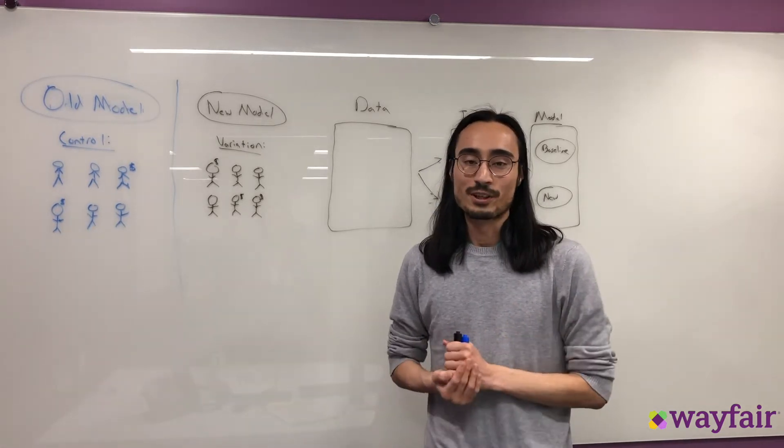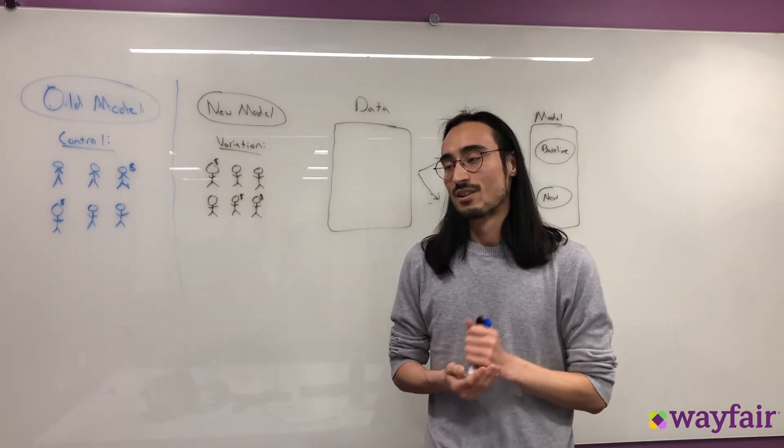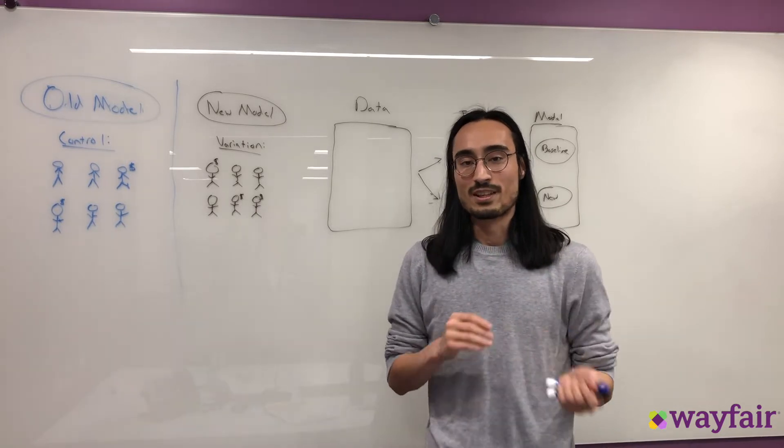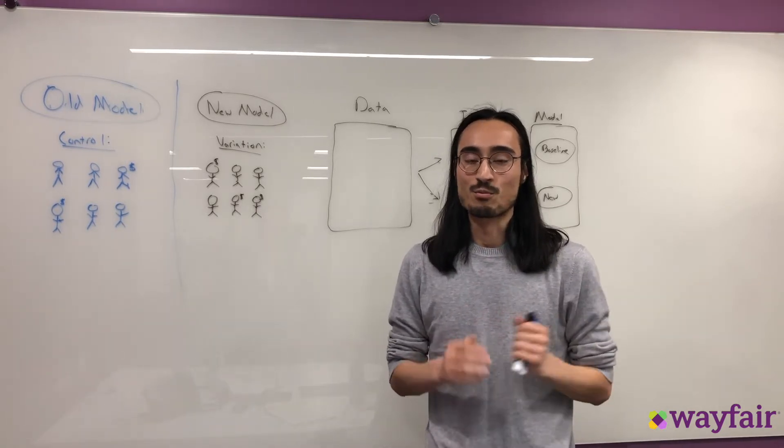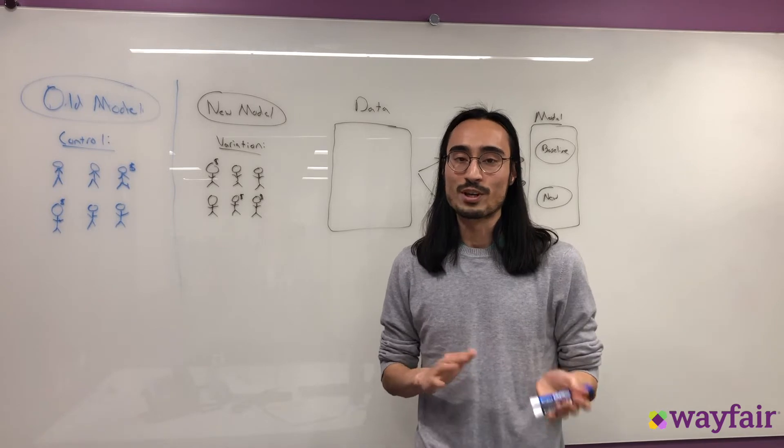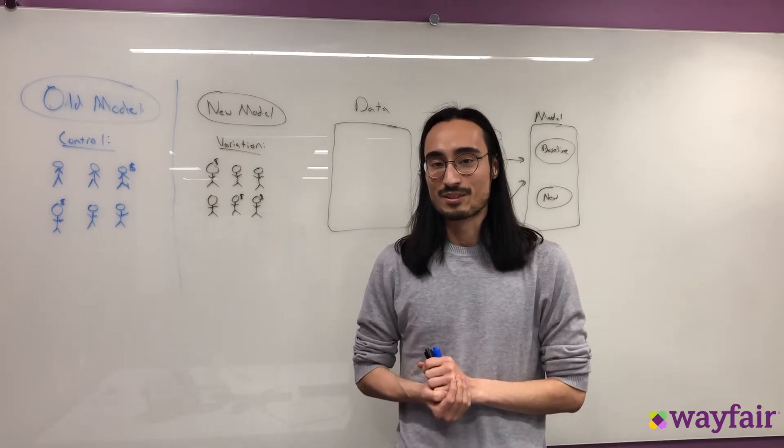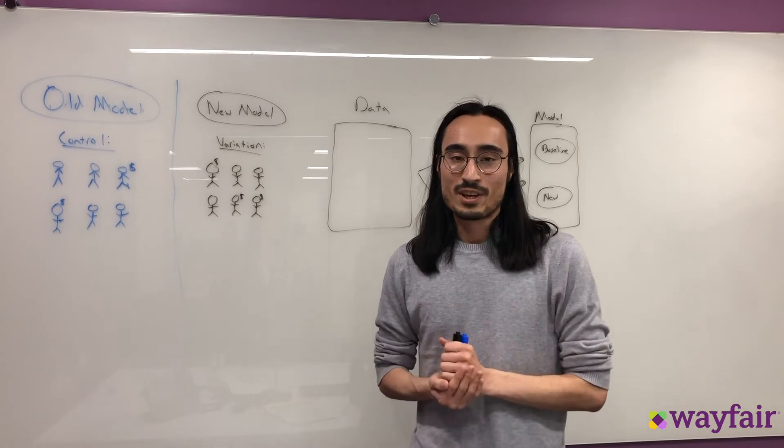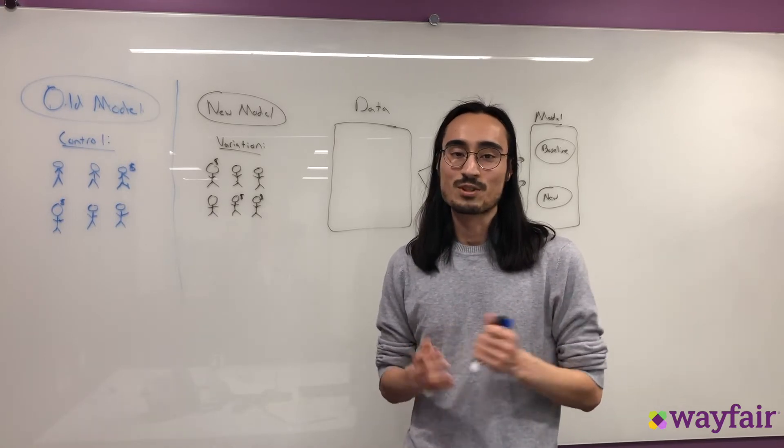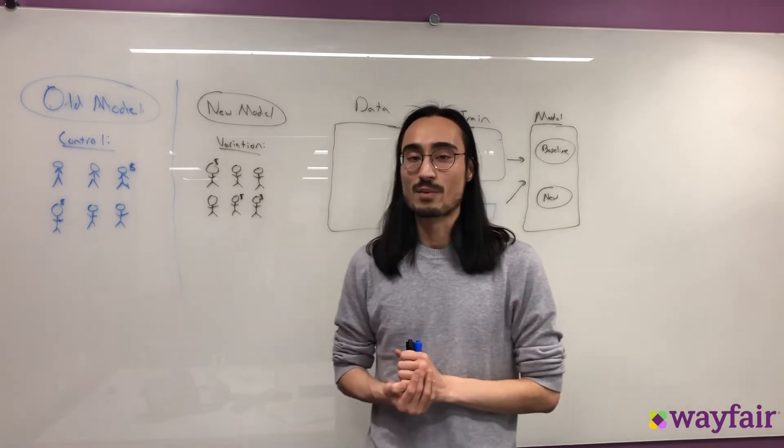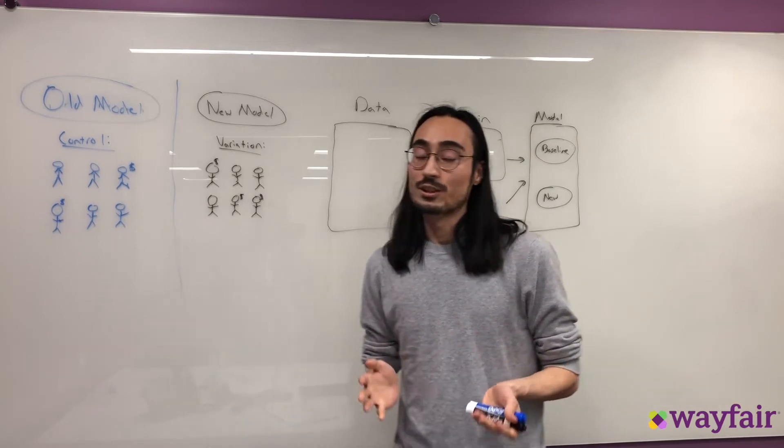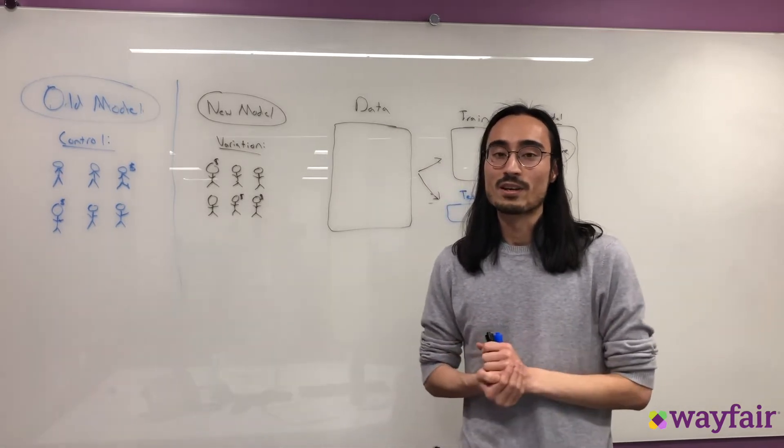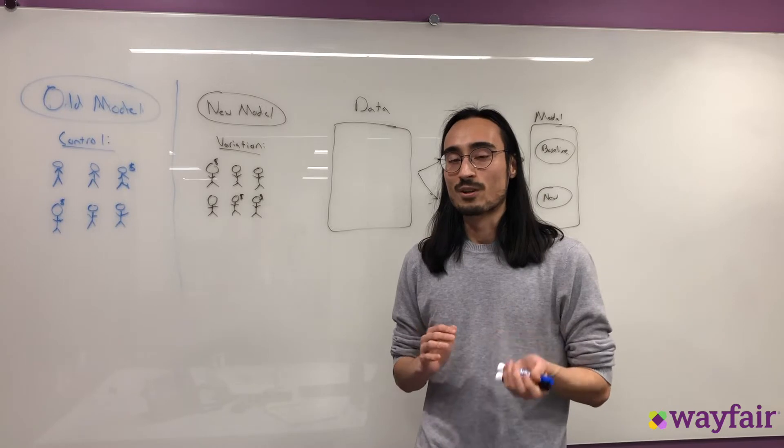But there's downsides to running an online A/B test. One of the issues is it takes a lot of coordination and effort from multiple teams at Wayfair to deploy and QA a model on site. Another issue is that running an online A/B test takes time, sometimes several weeks or even months depending on the amount of traffic. So ideally what we'd like to do is find a way that we can evaluate these models offline.